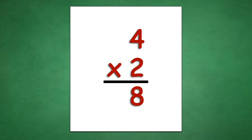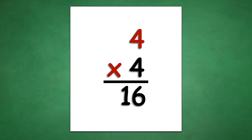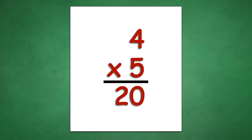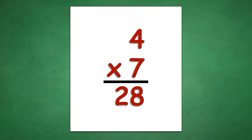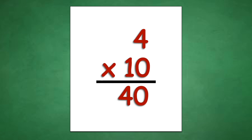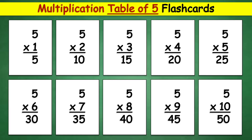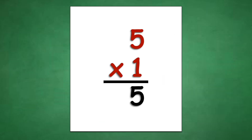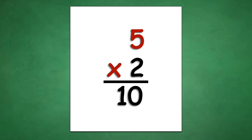Table of 4: 4 x 1 equals 4, 4 x 2 equals 8, 4 x 3 equals 12, 4 x 4 equals 16, 4 x 5 equals 20, 4 x 6 equals 24, 4 x 7 equals 28, 4 x 8 equals 32, 4 x 9 equals 36, 4 x 10 equals 40.